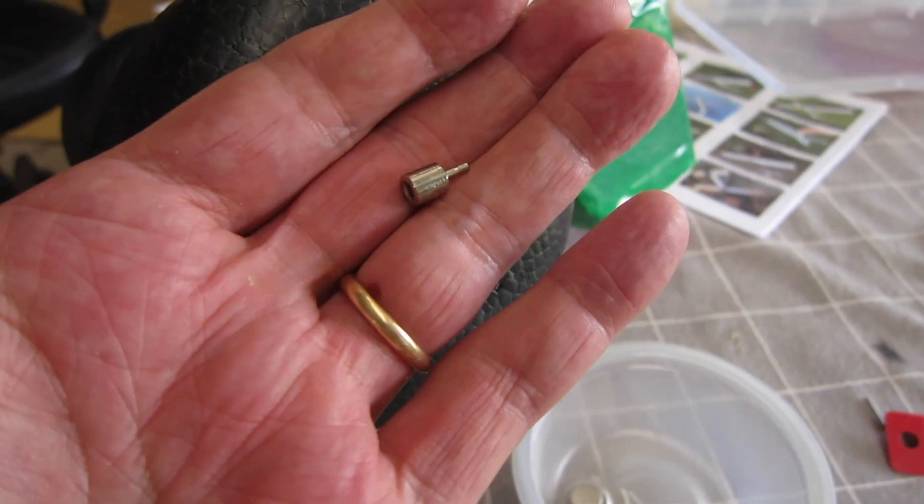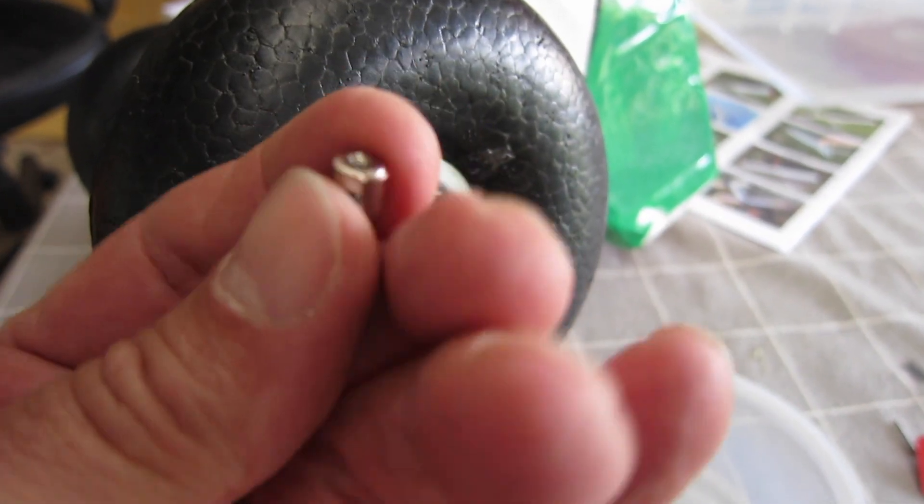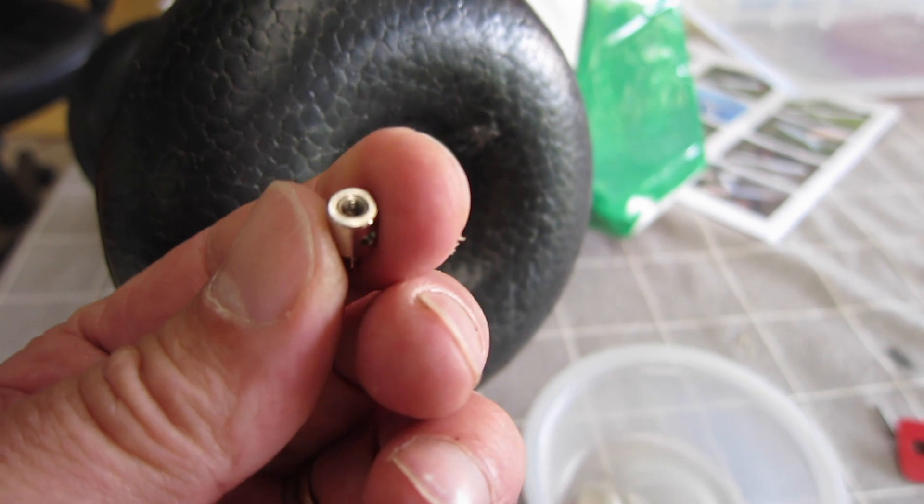I'm now using linkage adjusters which use a standard 1.5 millimeter grub screw in the end.